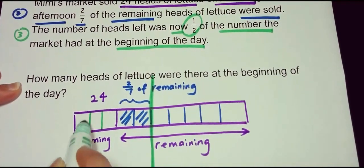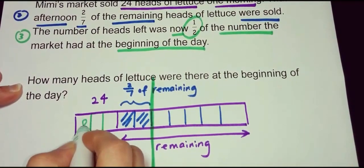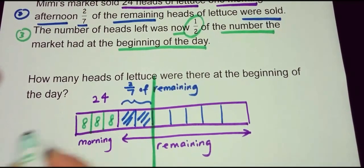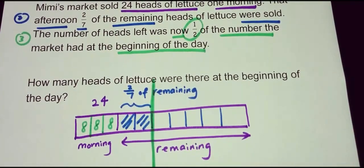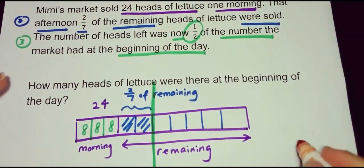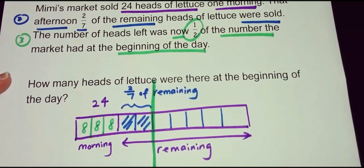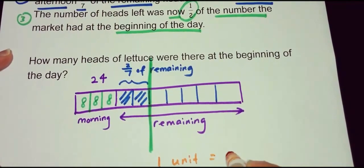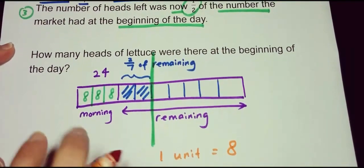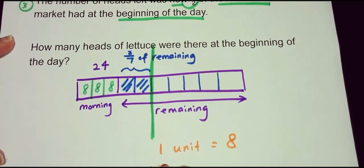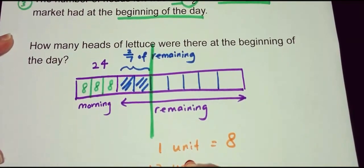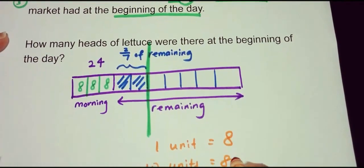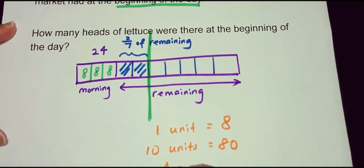For three parts to equal twenty-four, each part must be eight. So one unit equals eight, and ten units equals eighty. The answer is eighty.